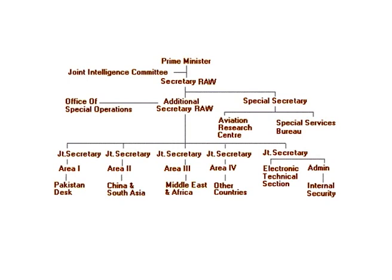RAW also has different regional headquarters with direct links to overseas stations, headed by a controlling officer who keeps records of different projects assigned to field officers posted abroad. Another important branch under the operational control of RAW is the Directorate General of Security, commonly known as DGS. This agency has oversight over organizations like the Special Frontier Forces, the Special Services Bureau, and matters related to the military are maintained through the Military Intelligence Advisory Group and the Military Advisor to the Director of RAW.